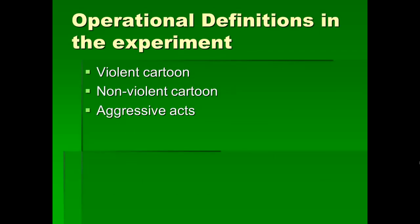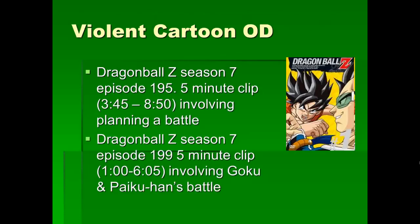In the experimental example, there are three operational definitions: violent cartoon, nonviolent cartoon, and aggressive acts. For example, here's how you could form an operational definition. For a nonviolent cartoon, it's an episode of Dragon Ball Z, season 7, episode 195 — a five-minute clip from 3 minutes and 45 seconds into the program, where they're sitting around talking about the upcoming battle and trying to figure out a strategy. That's a good operational definition. Now that I've described this to you, you could go out and replicate that part of the experiment exactly.